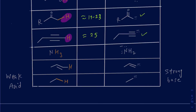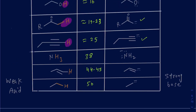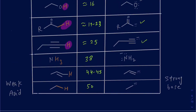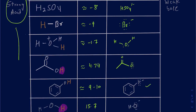Ammonia has a pKa of about 38. Alkenes have a pKa of about 44 to 45. And alkanes are the weakest acids — their pKa is around 50. So the higher the pKa, the weaker the acid. At the top of the list you have strong acids, and as you go down the acidity decreases.